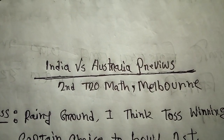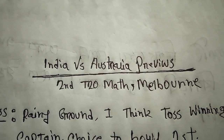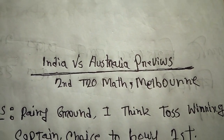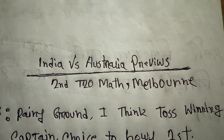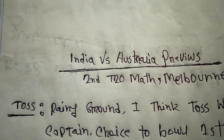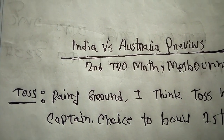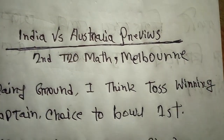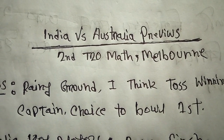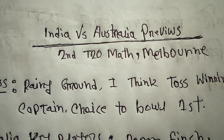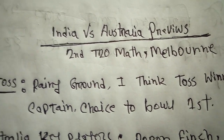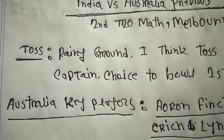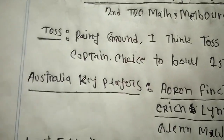Hello friends, welcome to my channel. I will share with you the India versus Australia second T20 match preview in Melbourne. Regarding the toss, I think the toss-winning captain will choose to bowl first because it's a rainy ground in Melbourne.